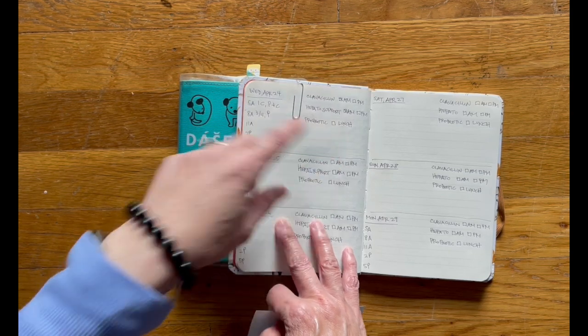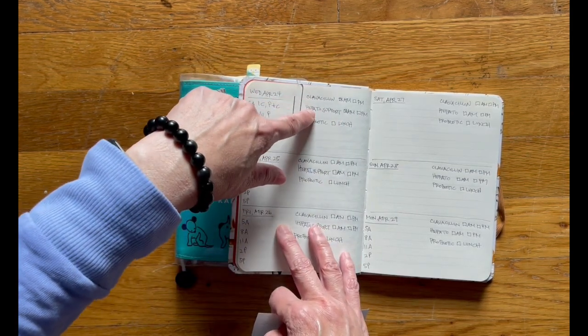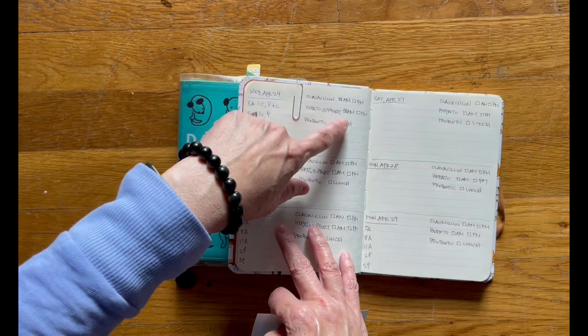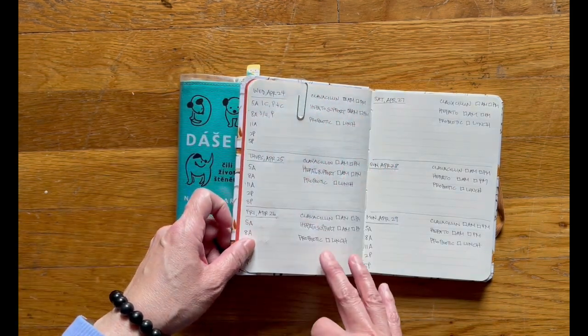So for lunch he's going to get a probiotic. And then at night he will get his antibiotic as well as his liver support pill. And this is how I'm keeping track of it.